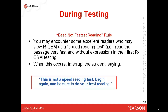Occasionally, you'll have students who are excellent readers and who may view RCBM as a speed reading test. In such cases, they might read the passage very fast, without expression, and literally race read. When this occurs, interrupt the student saying, 'This is not a speed reading test. Begin again and be sure to do your best reading.' That tends to recalibrate the student.